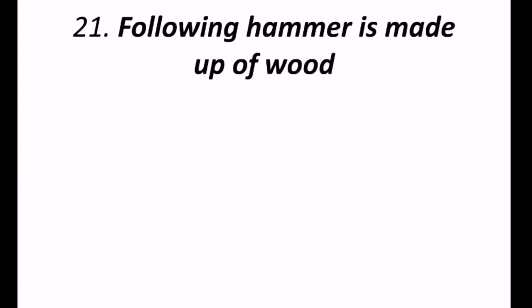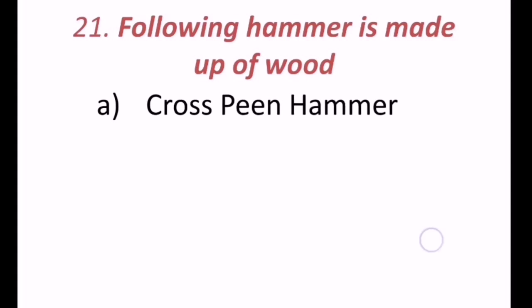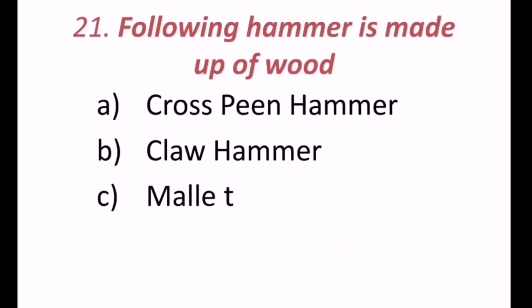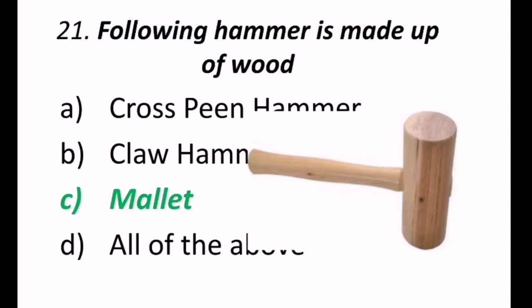21st question, following hammer is made up of wood. So that may be, cross peen hammer, or claw hammer, or mallet, or all of the above. The mallet is the hammer made up of wood. C is the correct answer.